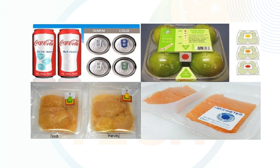Biosensors indicate the rate of degradation of the product through color. When the food product is yellow or greenish, the food is fresh and can be consumed. When the color changes to orange, quality has started to degrade. When it changes to red, it is a warning that consuming it might harm the consumer's health. These biosensors help consumers easily identify and monitor the inside status of the food product.